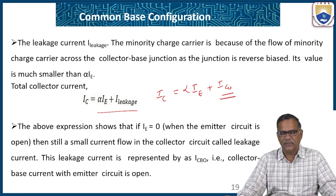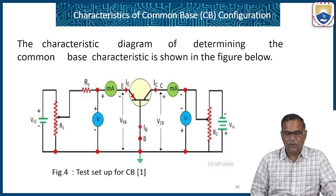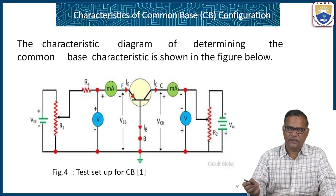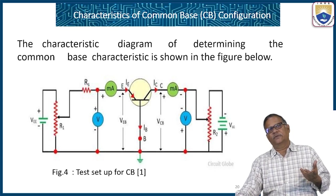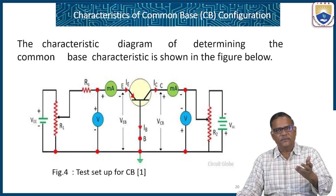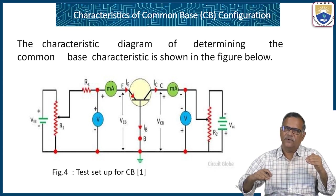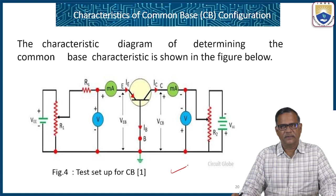To find the input and output characteristics of the common base amplifier: input characteristics show the variation of input voltage versus input current at a constant output voltage; output characteristics show the variation of output voltage versus output current at a constant input current. We change the input current to various values and observe the trend between output current and output voltage. This is the test setup required to determine the characteristics of the common base amplifier.